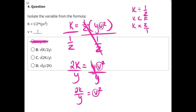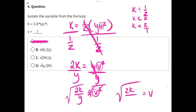Now the last thing we need to do to isolate v is get rid of this exponent. The opposite operation to an exponent is a radical — a square root. This square root will cancel out the exponent, and whatever we do to one side of the equation we always need to do to the other. So our final answer is v equals the square root of 2k divided by y, making C our correct answer.